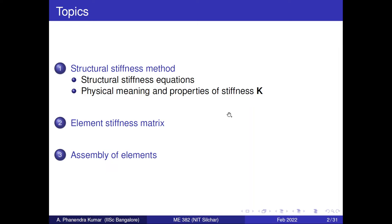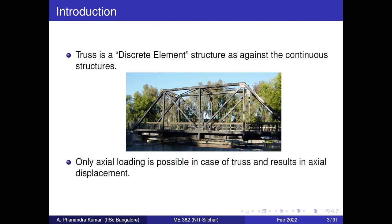Starting with the introduction — what do you mean by a truss, and how is it different from other structures? In this image you can see discrete elements which can be connected using nuts, bolts, or welding joints. Truss is a discrete element structure unlike many other continuous structures. These trusses can take only axial loading; whatever direction the load is supplied, the loads will be resolved along the member for doing stress analysis.